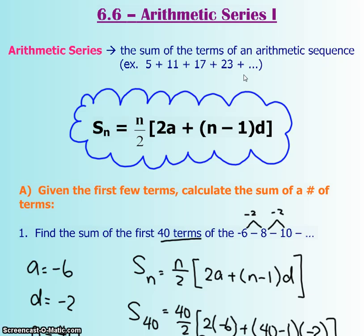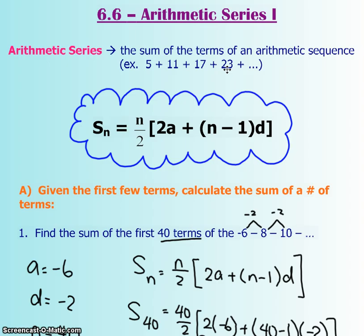This one, in particular, is an arithmetic series because it shows arithmetic qualities — you're adding a number each time to get to the next one. Within the bubble, you'll see a formula. That formula is for the sum of all the number of terms within a sequence.